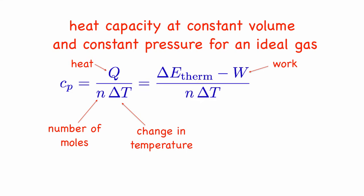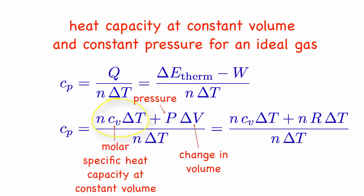Now we know that the change in thermal energy is determined by the number of moles times the heat capacity at constant volume times the change in temperature, and the work is minus the area under the pressure versus volume curve. But at constant pressure, that is just the pressure times the change in volume. We can use the ideal gas law to relate the pressure times the change in volume to the number of moles times the gas constant times the change in temperature.